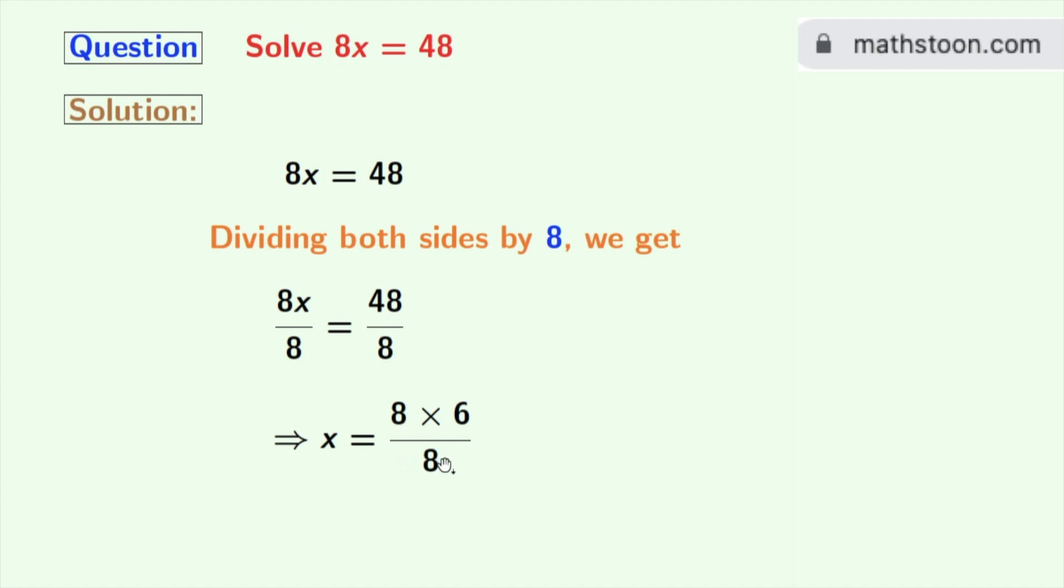Look that we have 8 in both the numerator and the denominator. So this gets cancelled and we are left with 6. So finally we get x is equal to 6 as our answer.